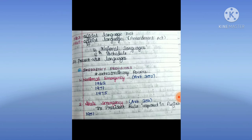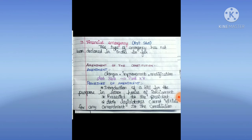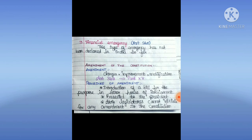Emergency Provisions grant extraordinary powers. There are three types: National Emergency, State Emergency, and Financial Emergency. National Emergency under Article 352 was declared three times: 1962, 1971, and 1975. State Emergency under Article 356 is the President's Rule, first imposed in Punjab in 1951. Financial Emergency under Article 360 has not been declared in India so far.